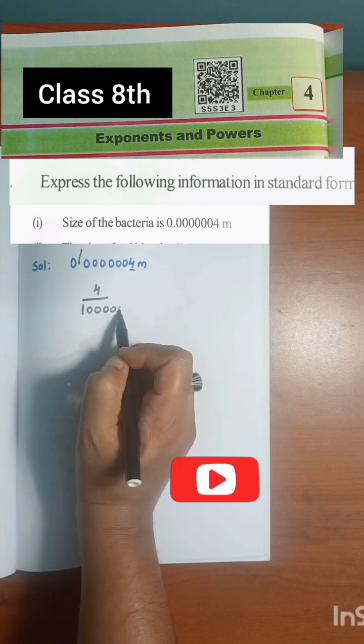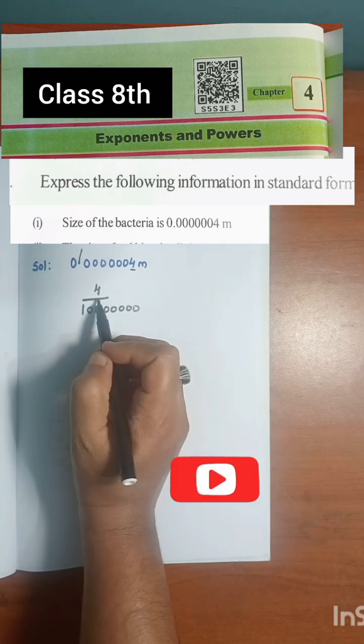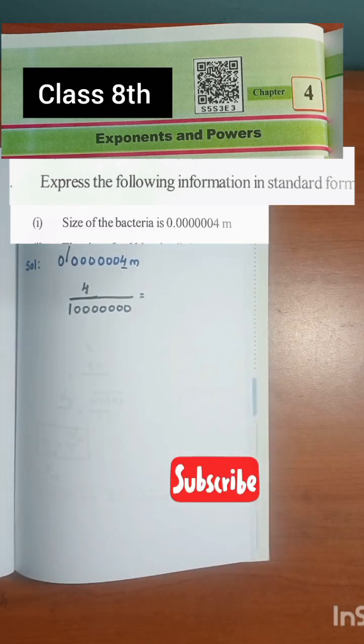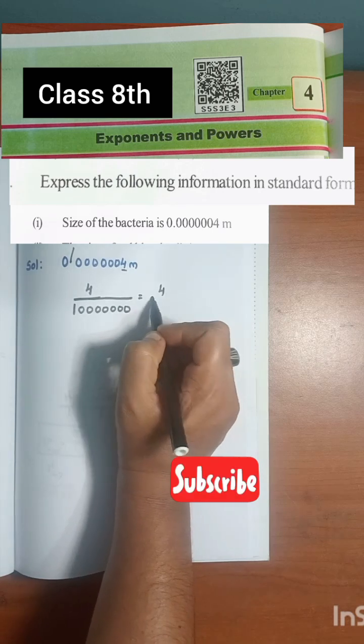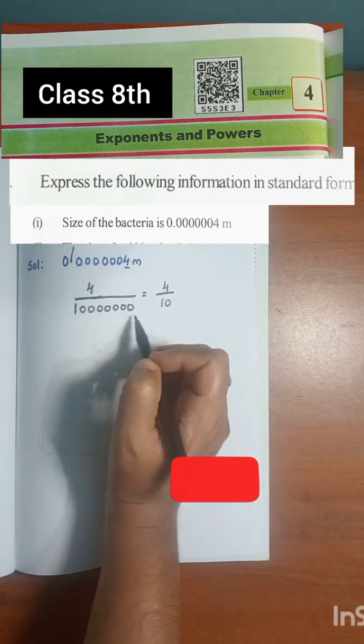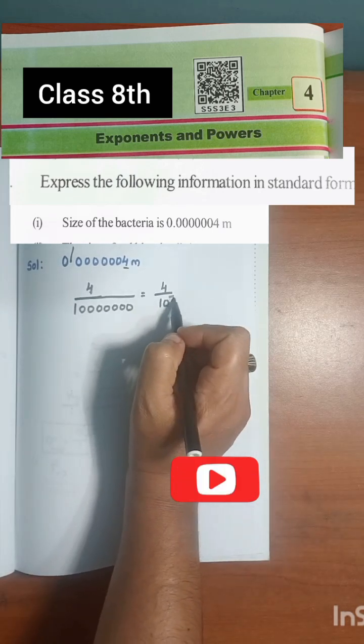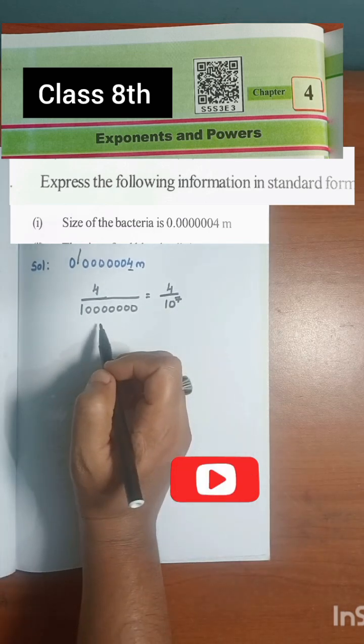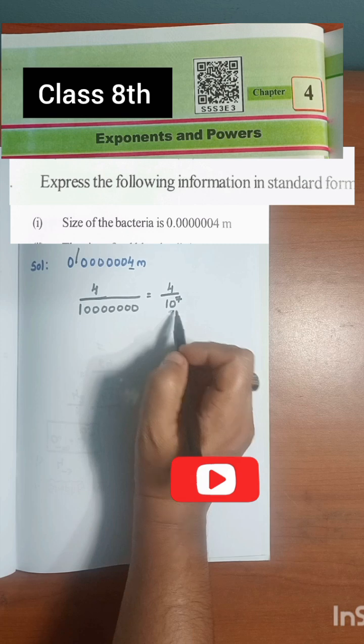This is one crore. Now we can write 4 by 10 to the power of 7. Zero is there, so we can write here 10 to the power of 7. So 10 to the power of 7 and this is the same - this one, only one crore. So the standard formula, exponent formula: 10 to the power of 7.